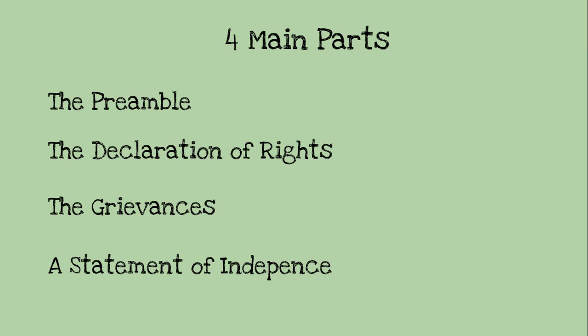So in the Declaration of Independence, there are four main parts. There's what's called the preamble, which just means like an introduction. This is not the same preamble as in the Constitution — that's the one where 'We the people, in order to...' This preamble starts 'When in the course of human events it becomes necessary...' They're different words because it's a different document. Every single document is going to have its own preamble and they will be different.